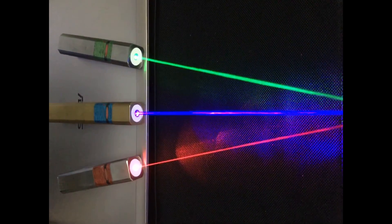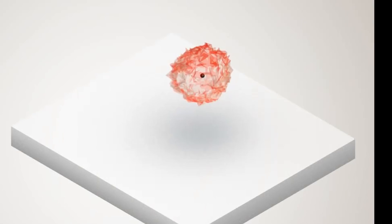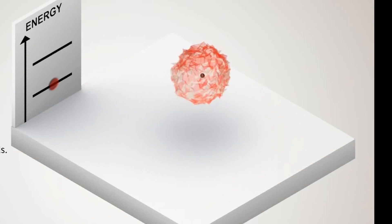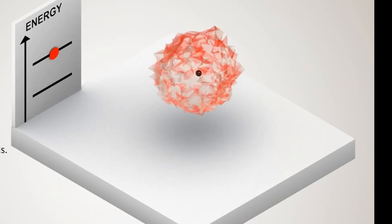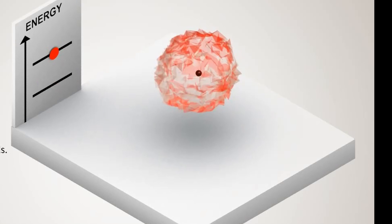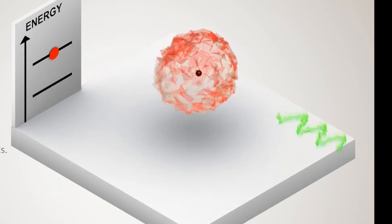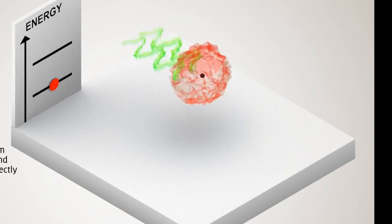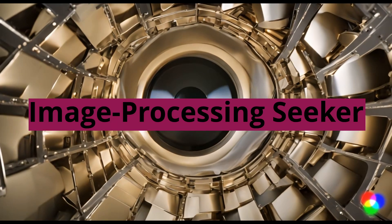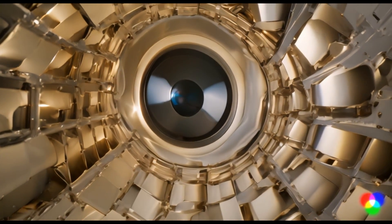Laser seekers: These seekers utilize laser energy to track targets. They work by emitting laser pulses towards the target. If the target is equipped with reflective material or is painted with a laser designator, the seeker detects the reflected laser energy, enabling the missile to track the target.